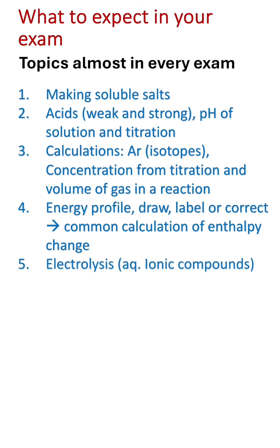Electrolysis will always appear as a question. The most common version, found in almost all exams, is electrolysis of aqueous ionic compounds — you need to identify which cation is reduced at the cathode and which anion is oxidised at the anode. Sometimes they ask about more than one reaction, including molten ionic compounds or the extraction of aluminium from aluminium oxide using electricity.